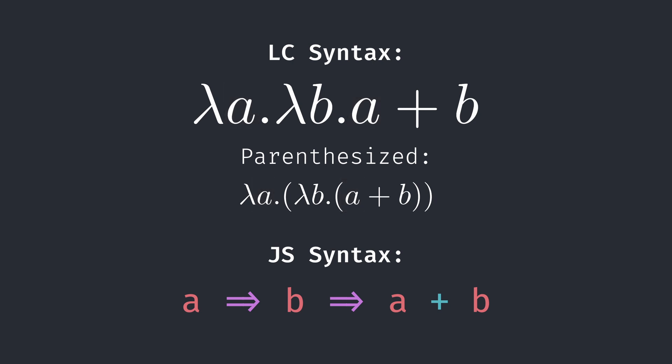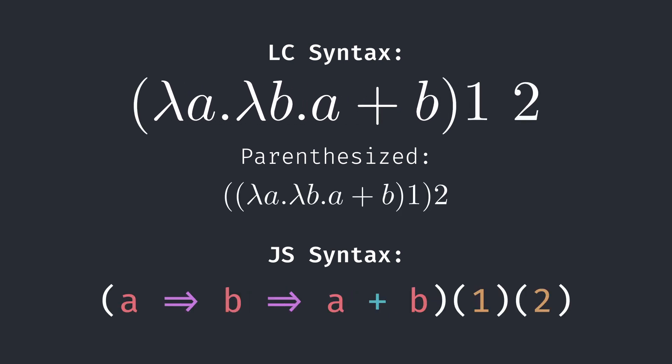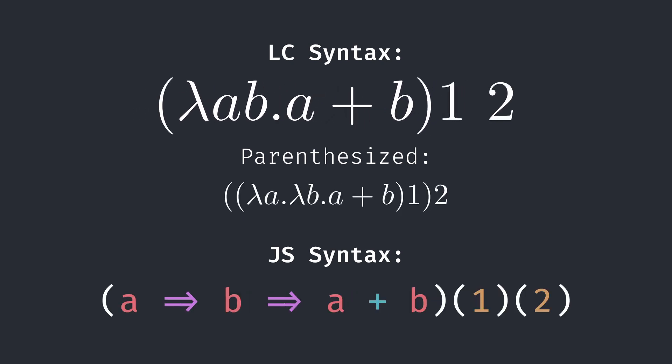We can do this for any amount of abstractions to get any amount of inputs we want. Now, instead of just passing in two parameters when I call add, we just call the function twice. We can also abbreviate curried functions in Lambda Calculus by simply writing consecutive parameters.